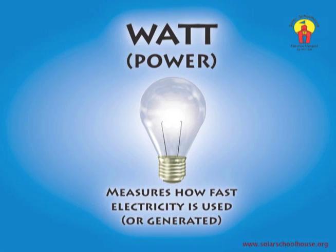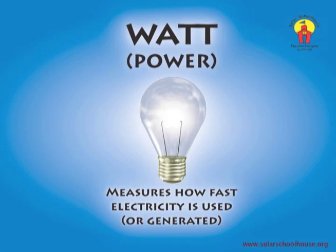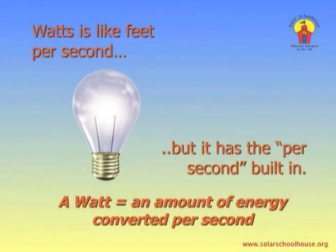Watts also measure how fast electricity is generated. Just like there can be a 50 watt light bulb, there can be a 50 watt solar panel. The 50 watt light bulb converts electricity into light at a speed of 50 watts. The 50 watt solar panel does just the opposite — it converts sunlight into electricity at a speed of 50 watts. A watt equals an amount of energy converted per second. Watts measure how quickly we convert energy, how fast we produce or use electricity.